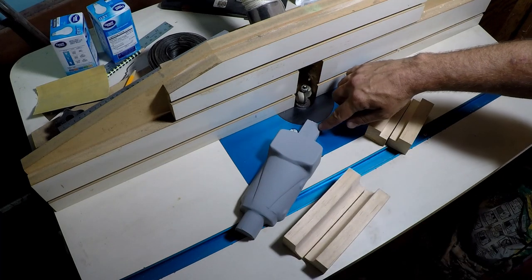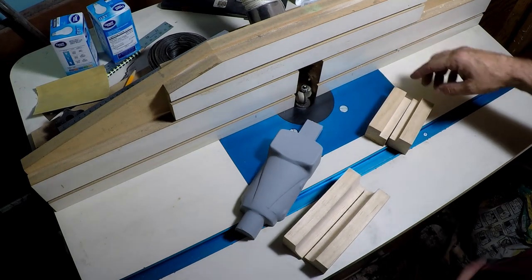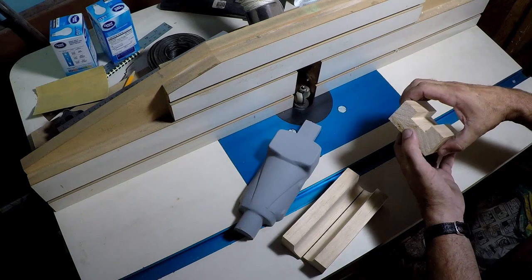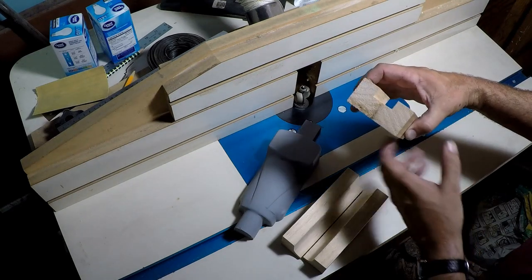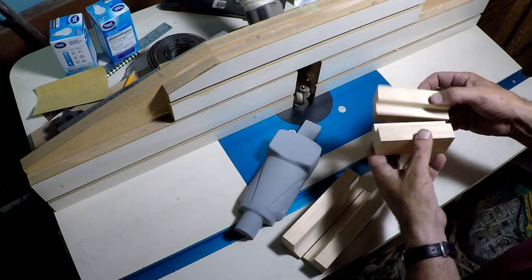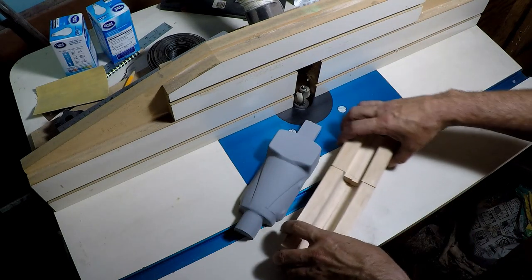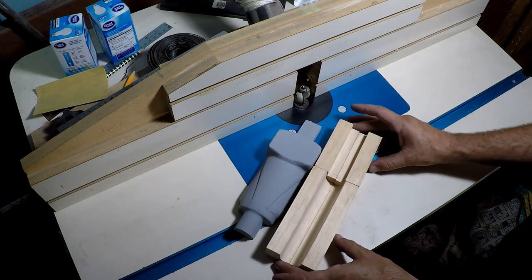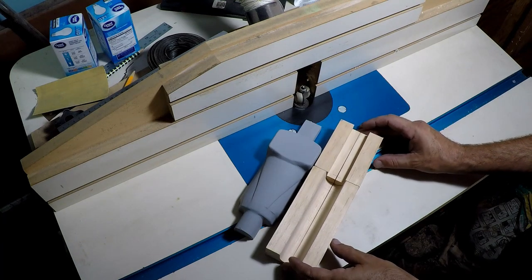And then I've got this rectangular section here, this end. And I did that just with a straight routing bit. Same method. Build it like this, over length, and I cut it down to where it's about the right length here. You can see this is actually longer still than the pattern.